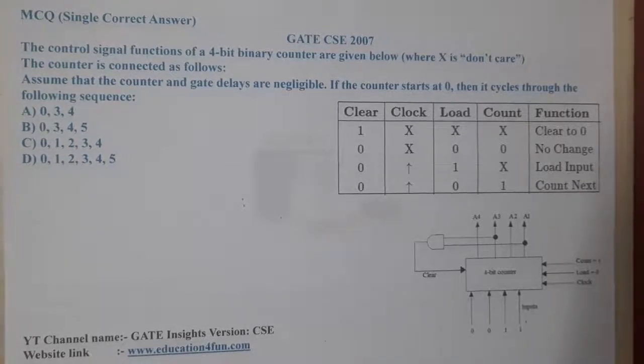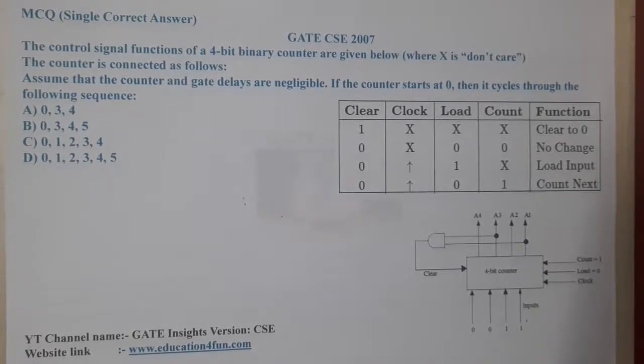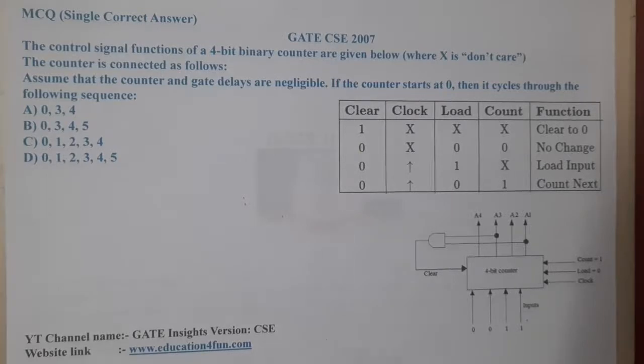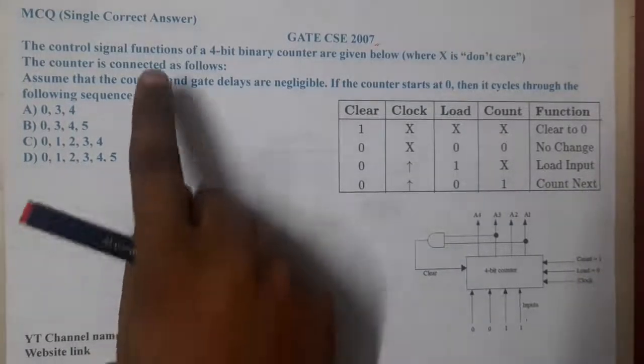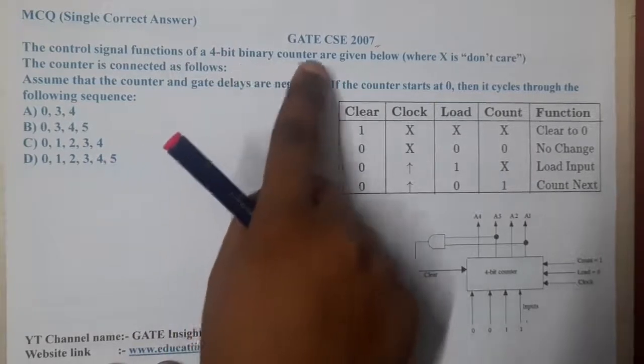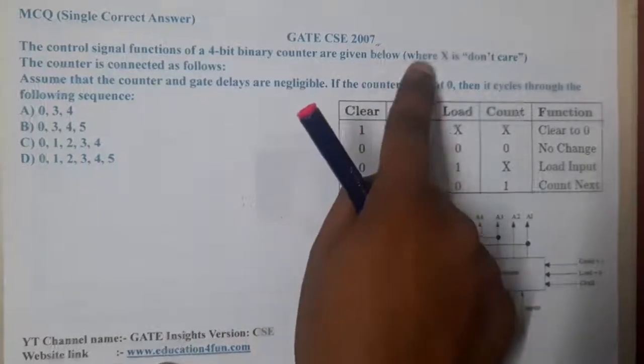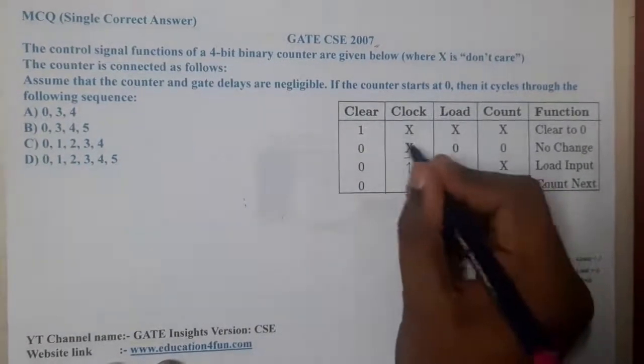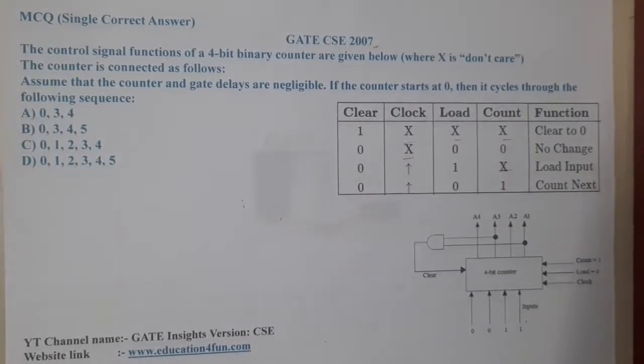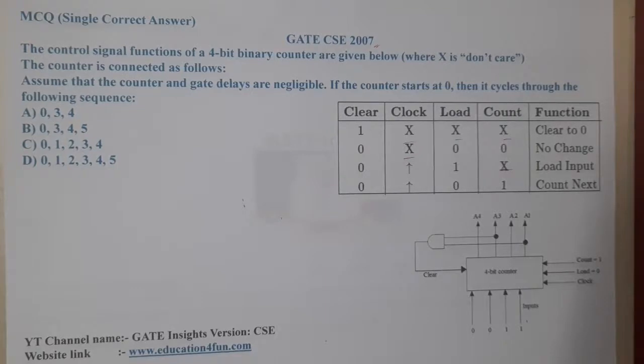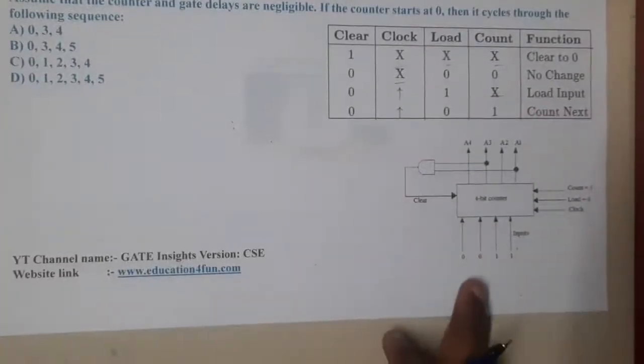Hello guys, we are back to the next lecture. This question belongs to GATE CSE 2007. The question is: the control signal functions of a 4-bit binary counter are given below where X is don't care. Let us check what exactly they are saying.